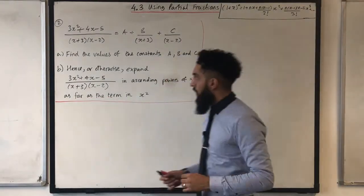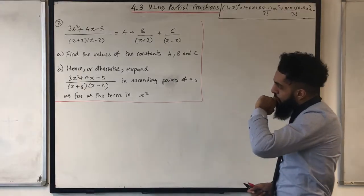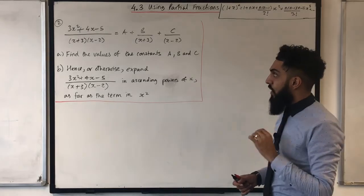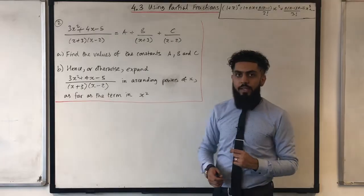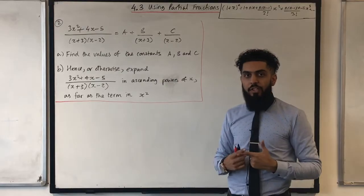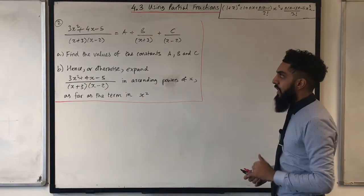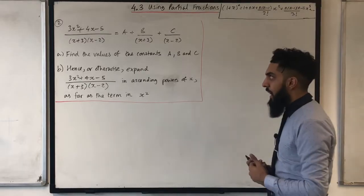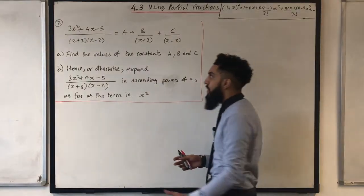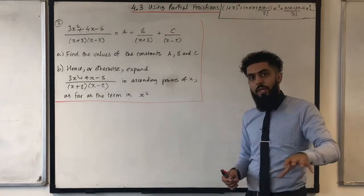Let's have a look at question 2. The fraction given looks complex because the numerator is a quadratic and the denominator is also a quadratic. The coefficient of x squared in the numerator is 3 and in the denominator is 1, which suggests it could be an improper fraction. You can confirm this by substituting a value of x — in this case it will indeed be an improper fraction.